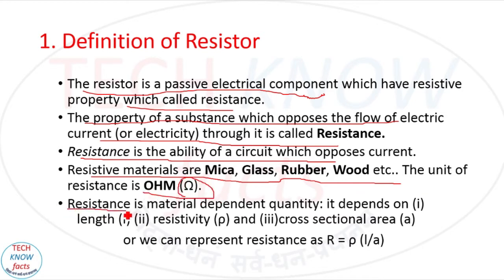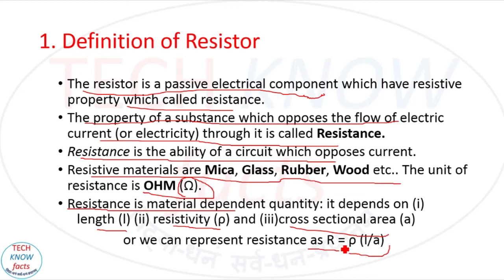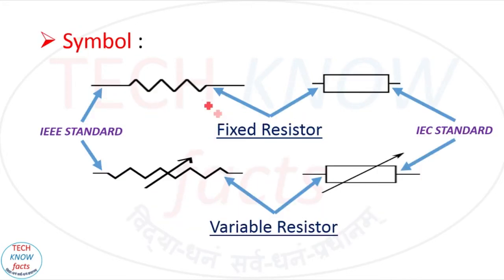Resistance is a material-dependent quantity. It depends on length L, resistivity rho, and cross-sectional area A. The formula to find resistance is R = rho·L / A, where rho is the resistivity of a material, L is the length of the material, and A is the cross-sectional area.